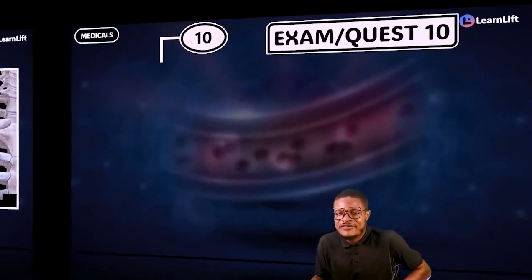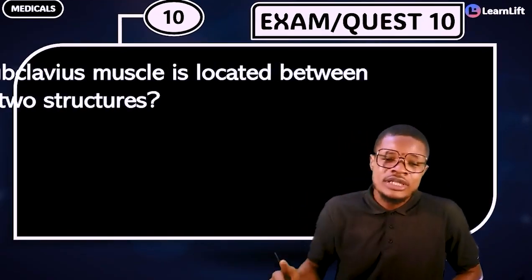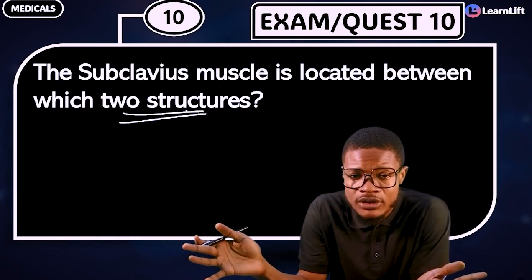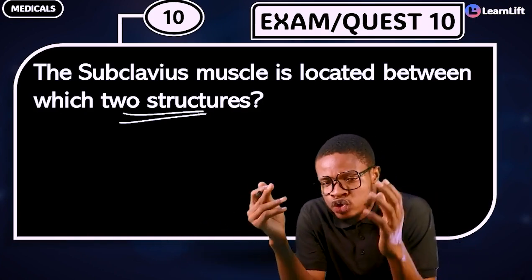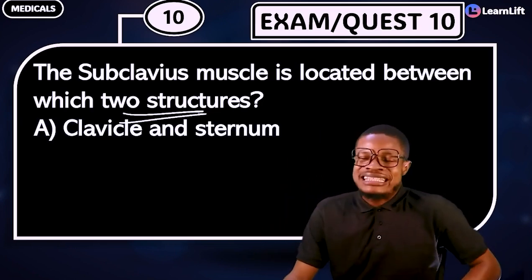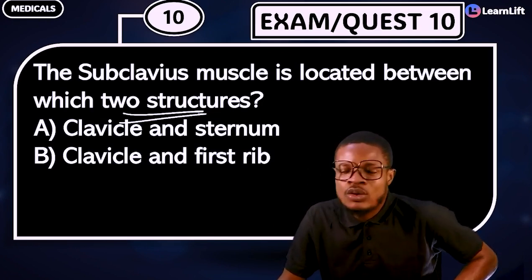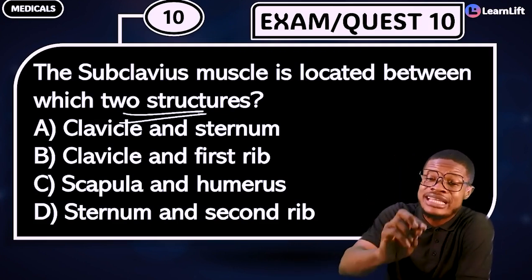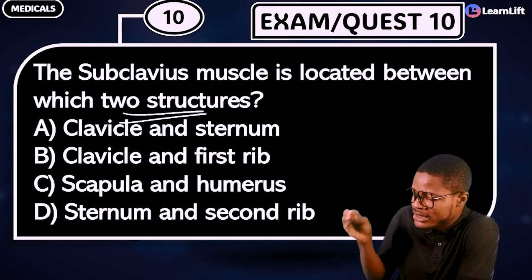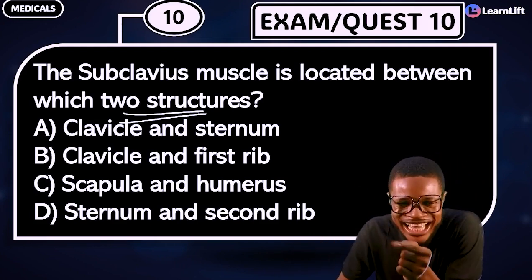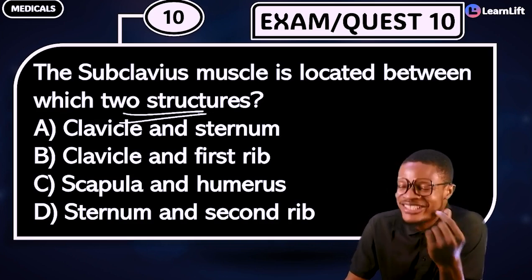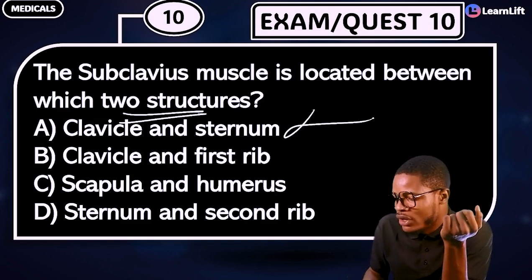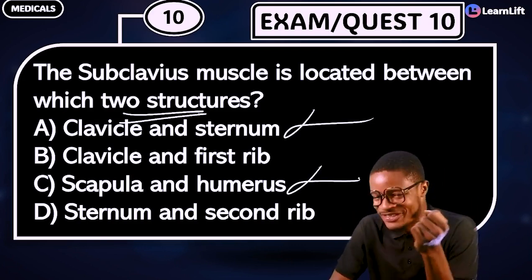Question 10: the subclavius muscle is located between which two structures? Option A: clavicle and sternum. Option B: clavicle and first rib. Option C: scapula and humerus. Option D: sternum and secondary. I'll give you a 50-50 — it is not clavicle and sternum, and it is not clavicle and humerus. Drop your answer in the comments.